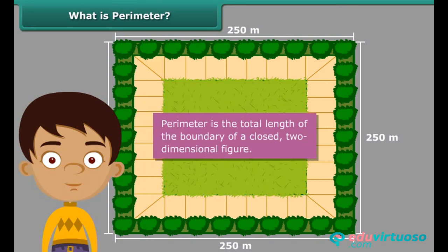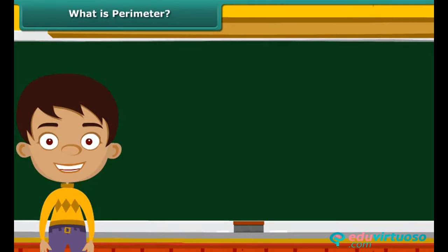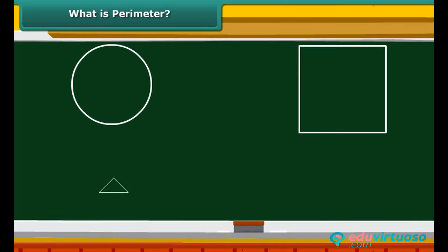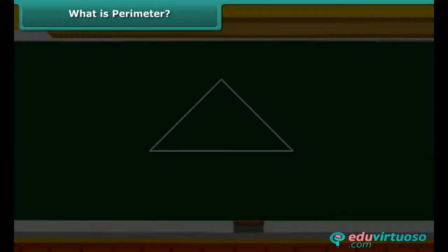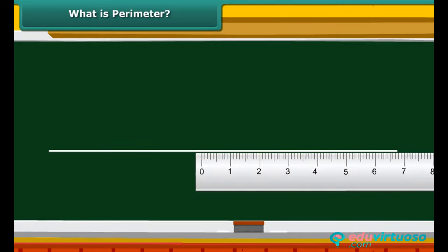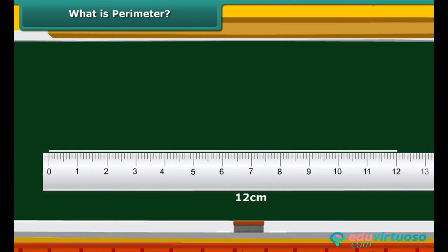Perimeter is the total length of the boundary of a closed two-dimensional figure. Here is a simple technique of measuring the perimeter of a shape: take a closed geometric shape such as a circle, square, triangle, or rectangle made of string. Untie the string and measure its length. The length of the string is the perimeter of the chosen geometric shape.